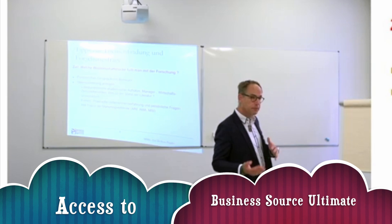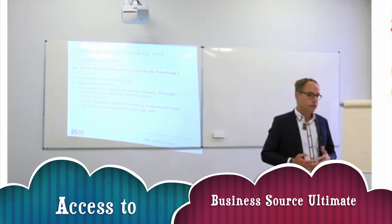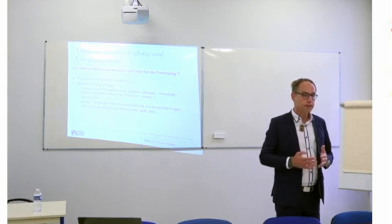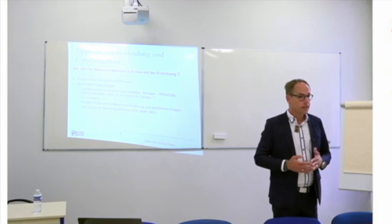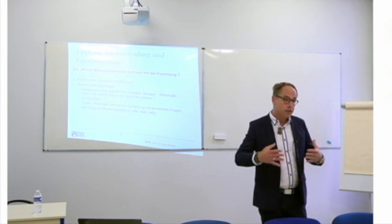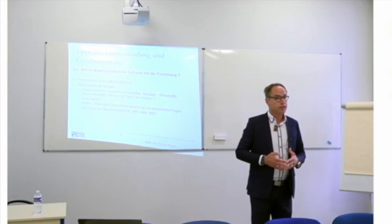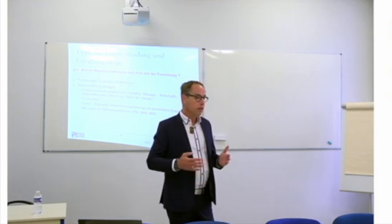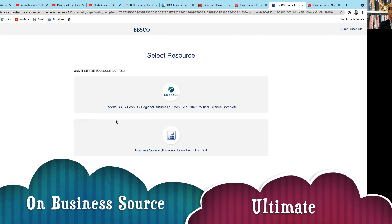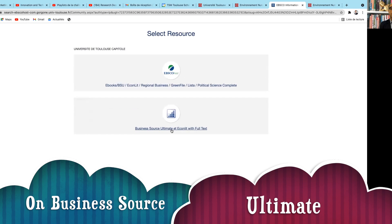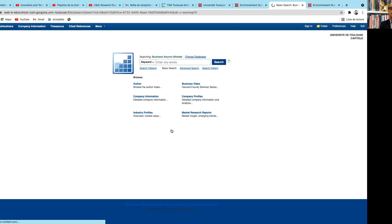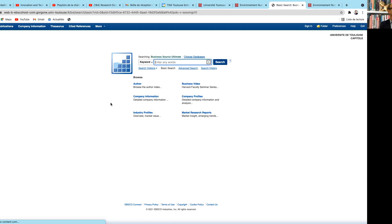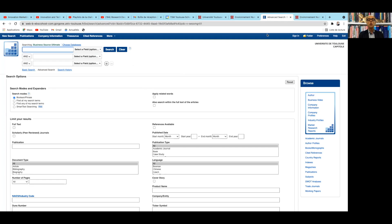First, you go to the website of EBSCO Business Source Ultimate, which you can find in the slides provided to you. Then you use the login and the password that the Business Science Institute has given you to log in. Once in the platform, you click on Business Source Ultimate and you can enter keywords. Go to the advanced search option.